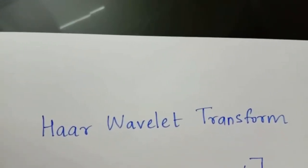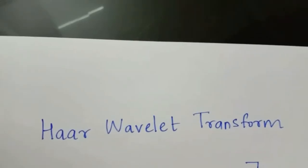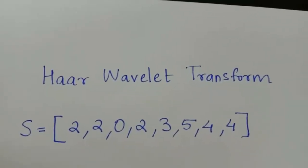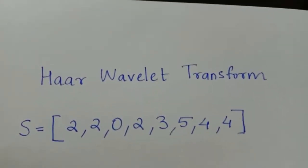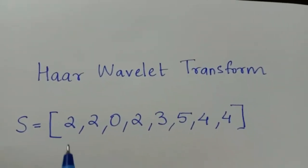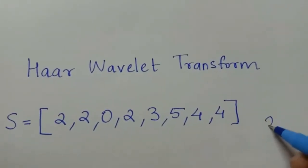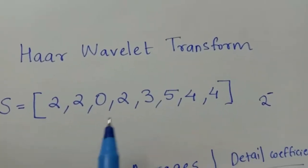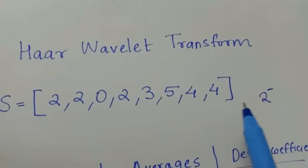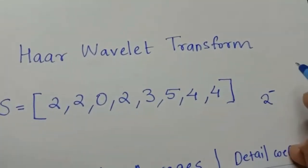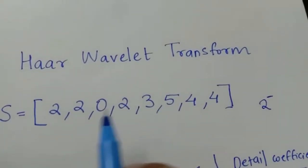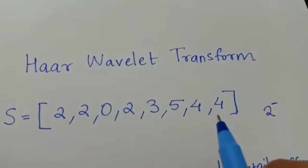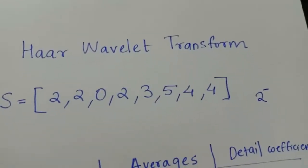Today we will be seeing a problem on Haar wavelet transform. This is our input vector and we have to reduce it using Haar wavelet transform. Before starting, we have to check that our input vector has a number of elements which is a power of 2. Here we have eight elements, so it's fine. If the number of elements is not a power of 2, we have to pad with zeros.